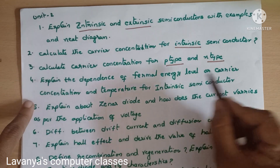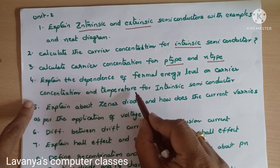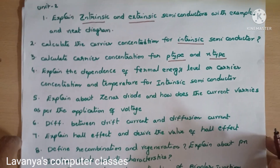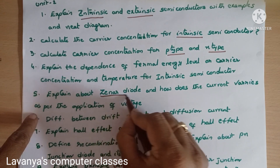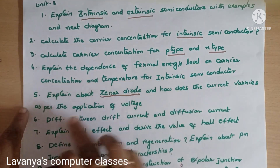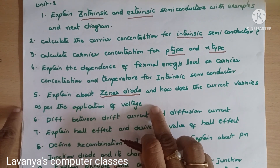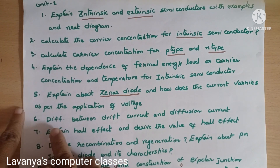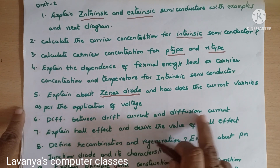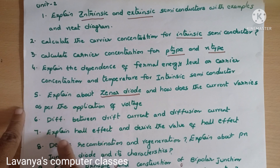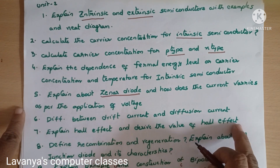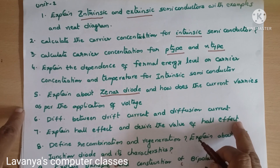Fourth question: explain the dependence of Fermi energy level or carrier concentration on temperature for an intrinsic semiconductor. Fifth: explain about Zener diode and how current varies with the application of voltage. Sixth: differentiate between drift current and diffusion current. Seventh: explain the Hall effect and derive the value of the Hall coefficient.